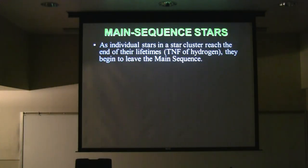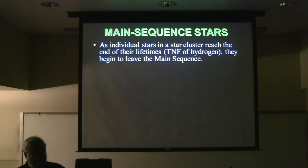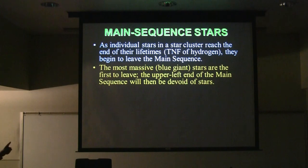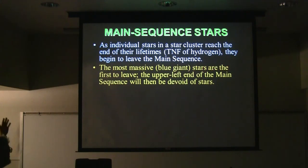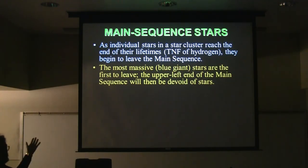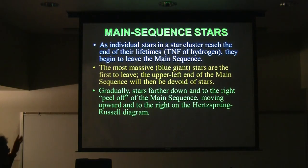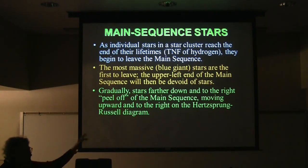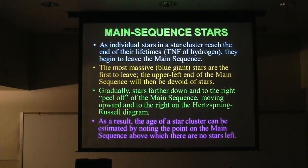As individual stars in a star cluster reach the end of their lifetimes, they start to leave the main sequence. The most massive blue giant stars on the upper left are the first ones to leave, becoming red supergiants. Gradually, as the cluster gets older and older, stars farther down the main sequence peel off and go towards the right. So you can get a rough idea of whether you're looking at an old cluster or a new cluster — just make an HR diagram. If it's still got blue giants in the upper left, it's a young cluster.